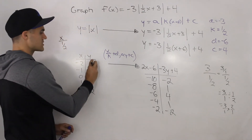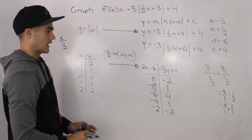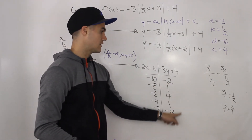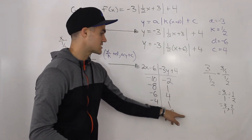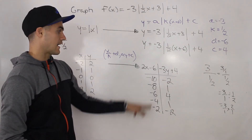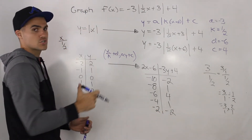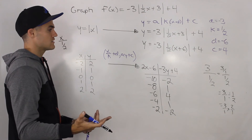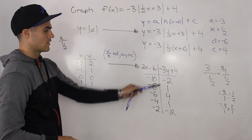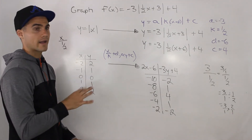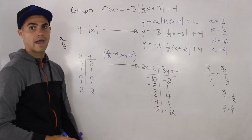Notice how the y values for the parent absolute value function are symmetrical, and the transformed y values are symmetrical as well. This should always be the case for both the absolute value function and the quadratic function y equals x squared. If they're not symmetrical, go back and check your work with the mapping formula or the algebra.